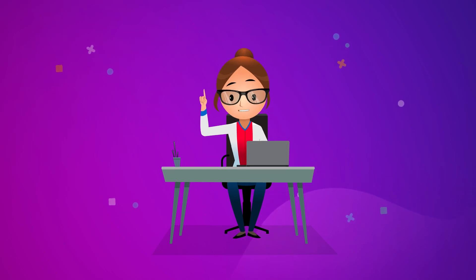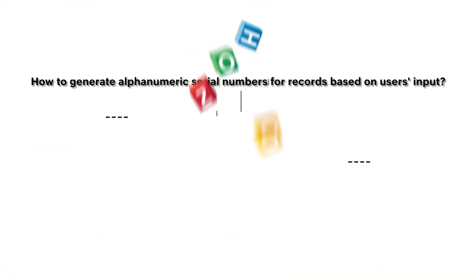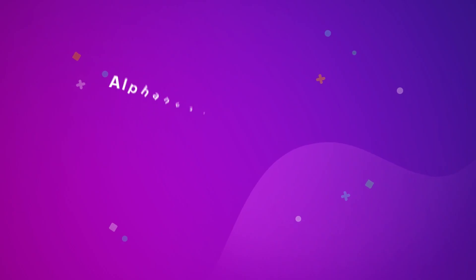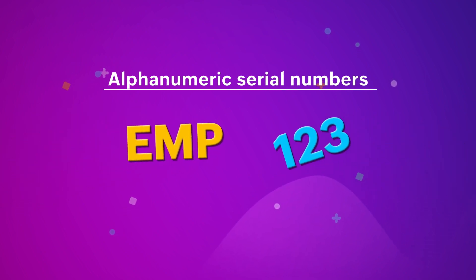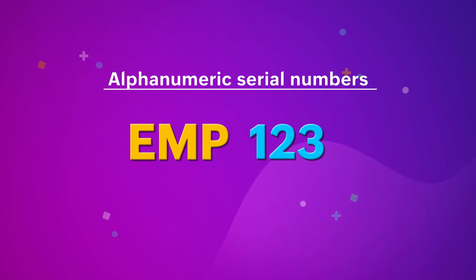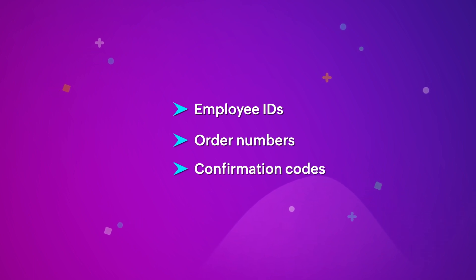Hello everyone! In this video, we'll see how to automatically generate alphanumeric serial numbers for records in a consecutive order based on user's input. Alphanumeric serial numbers are a combination of alphabetical and numeric characters you can assign to a record. Such serial numbers may be required for different business requirements such as generating employee IDs, order numbers, confirmation codes, and for a whole bunch of other uses.